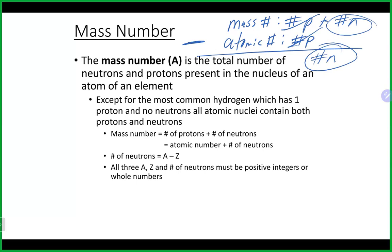Every element has protons, electrons, and neutrons, except for hydrogen, which has no neutrons — just one proton and one electron. All other elements have all three particles. When you calculate the mass number, atomic number, or number of protons, electrons, and neutrons, they should all be positive whole numbers.